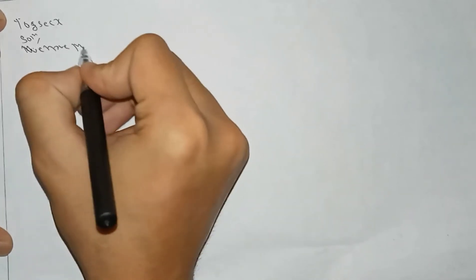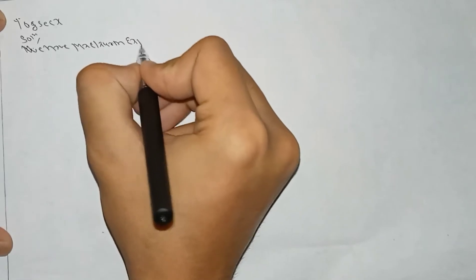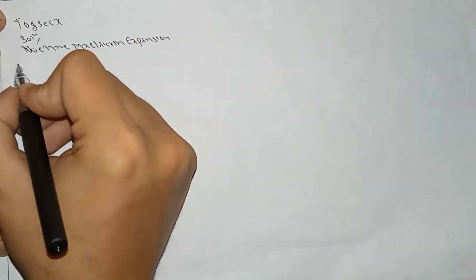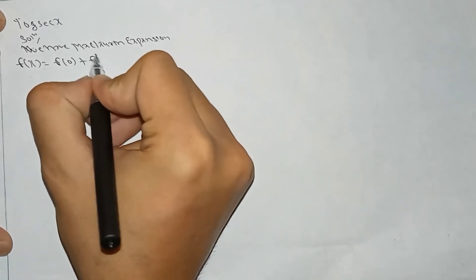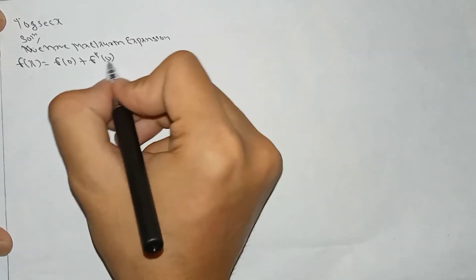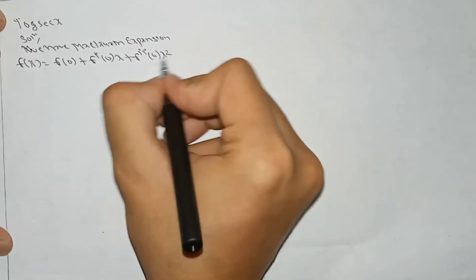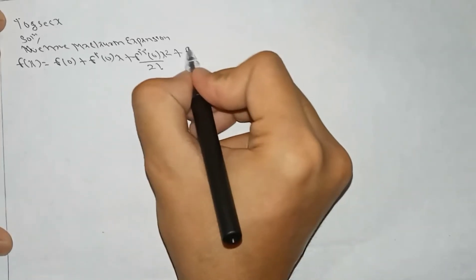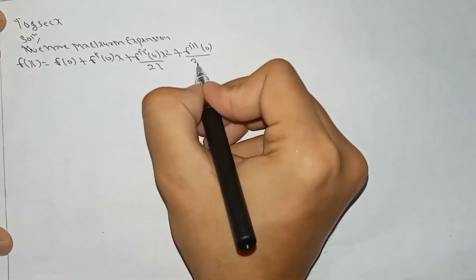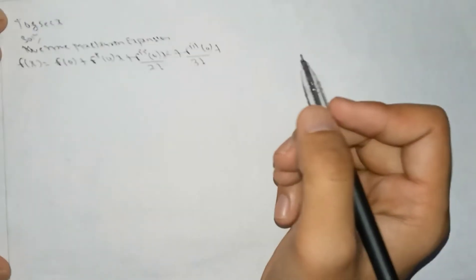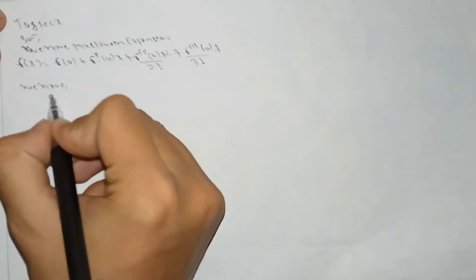We have the Maclaurin expansion: f(x) = f(0) + f'(0)·x + f''(0)·x²/2! + f'''(0)·x³/3! + ... So here is the formula for the Maclaurin expansion.